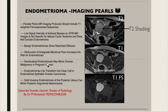Decidualized endometriosis can mimic ovarian malignancy in pregnant women. If an endometrioma is present during pregnancy, we may face difficulty in diagnosis because it can be decidualized. We should be careful, as it can mimic a malignancy.